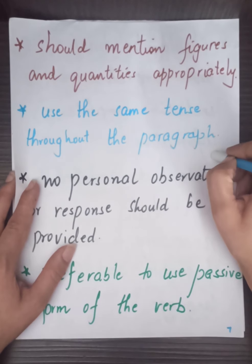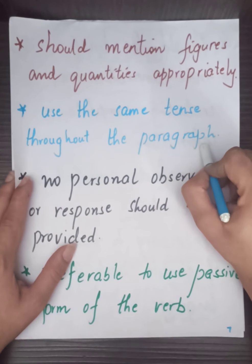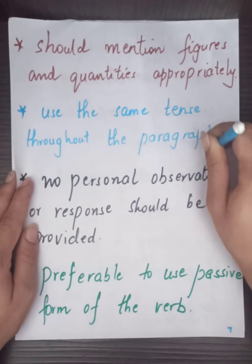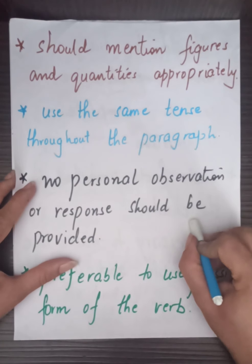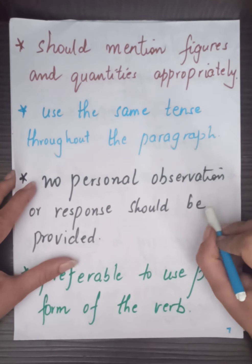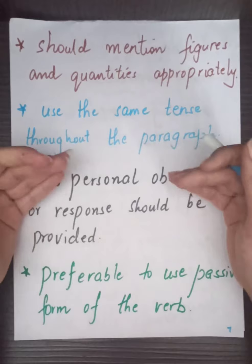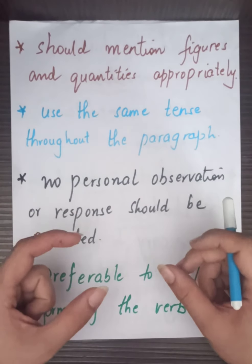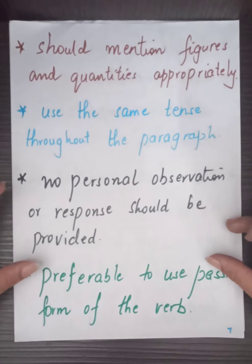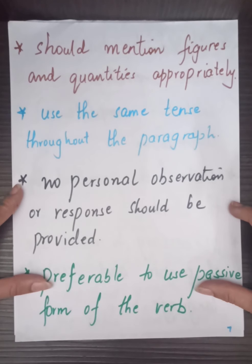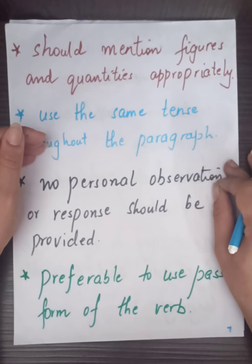Now comes your tense. Remember: use the same tense throughout the paragraph, and preferably use the passive form of the verb. No personal observation or response should be provided. You have to look into the evidence and support your sentences with the data given to you in the question, which can be in the form of a table or a pie chart. Do not add any other information which is not given to you, as that would be incorrect.